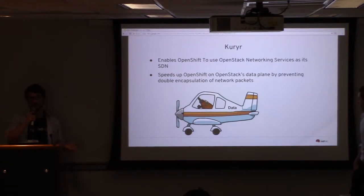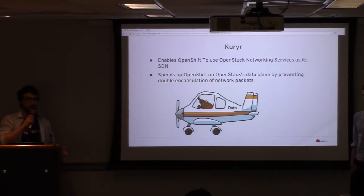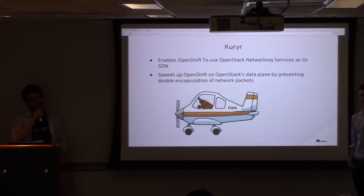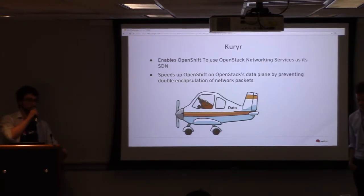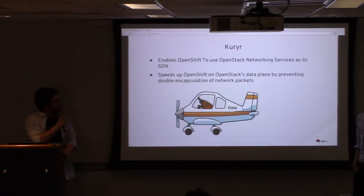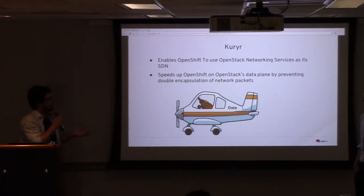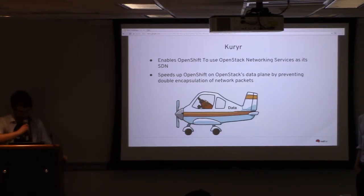Why do we want this? Both OpenShift and OpenStack have their own software-defined networking solutions, and the problem is that both of them inject their own checksums and headers into their networking packages, making them very slow to decrypt. By going around that, you can really speed up the networking for OpenShift on OpenStack.